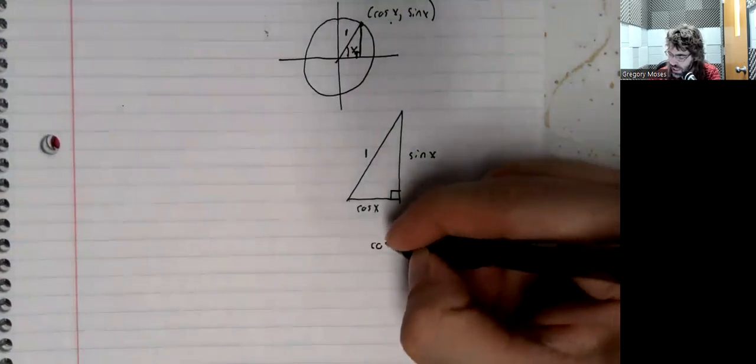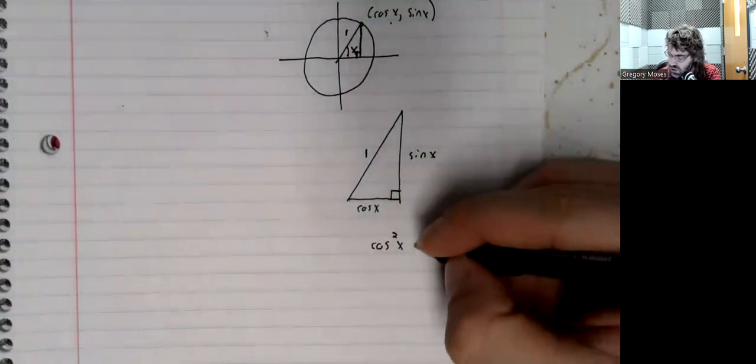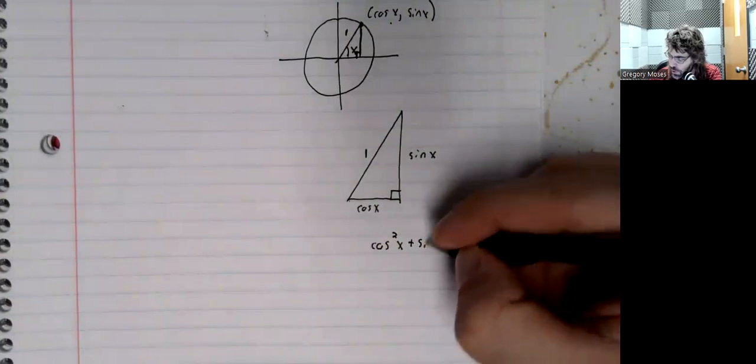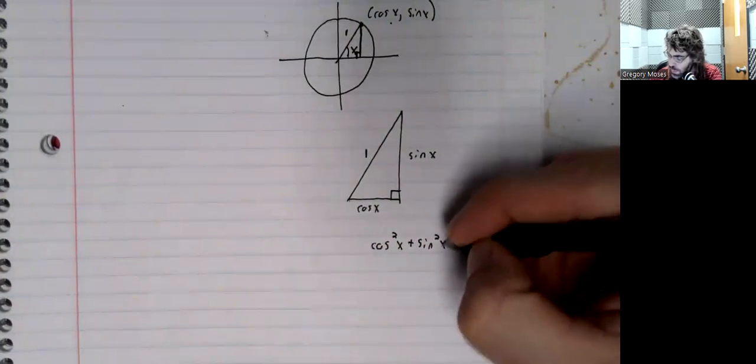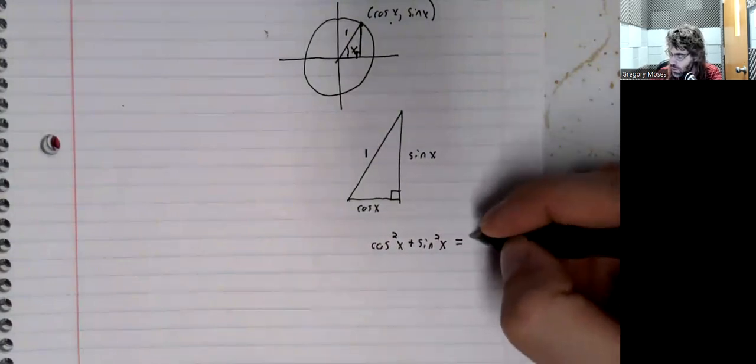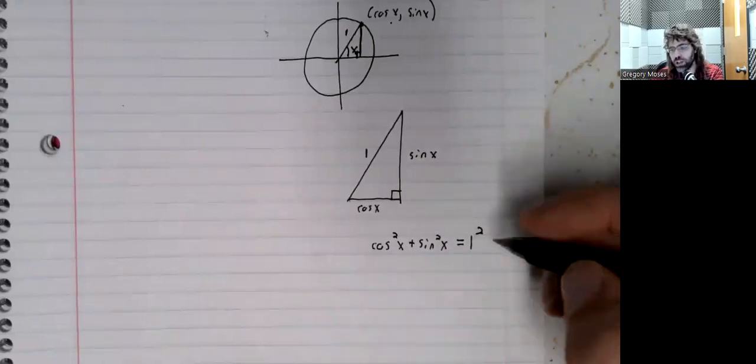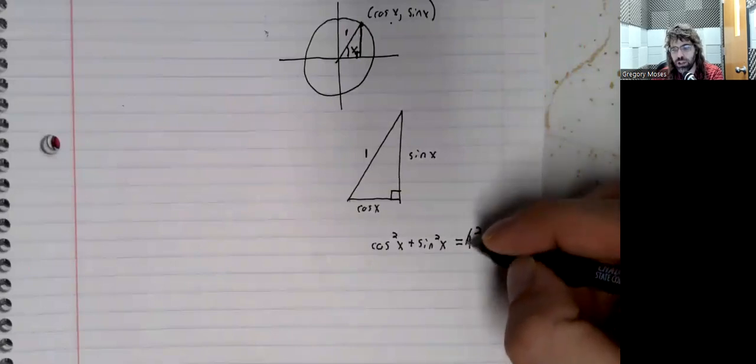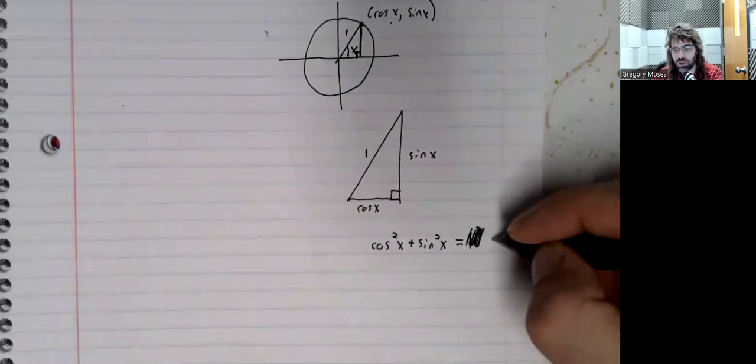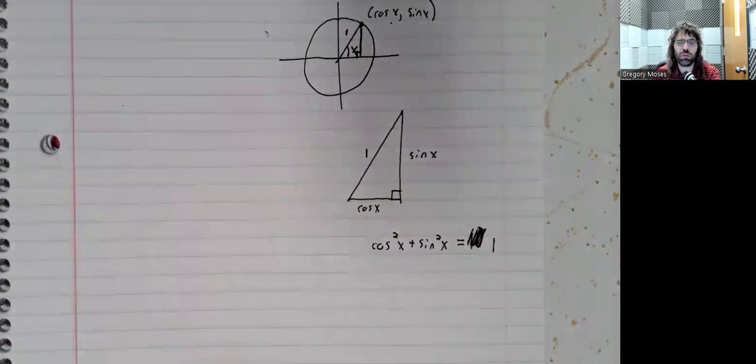We take the legs, we square them, we add those squares together, we get the hypotenuse squared. Well, one squared is one, so the Pythagorean theorem gives us the Pythagorean identity.